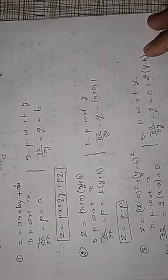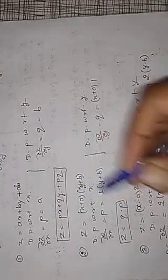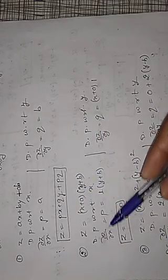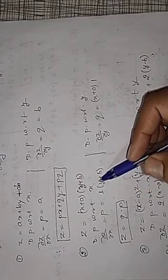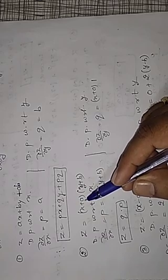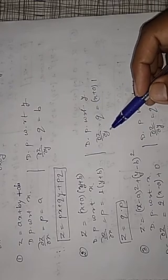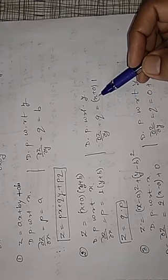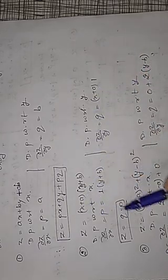Similarly, for Z = (X + A)(Y + B), where A and B are arbitrary constants. Differentiating partially with respect to X: p = ∂Z/∂X = (Y + B), since (Y + B) is constant and the partial derivative of (X + A) with respect to X is 1. Differentiating partially with respect to Y: q = ∂Z/∂Y = (X + A), since (X + A) is constant. Substituting back: Z = p × q, giving Z = pq as the partial differential equation.